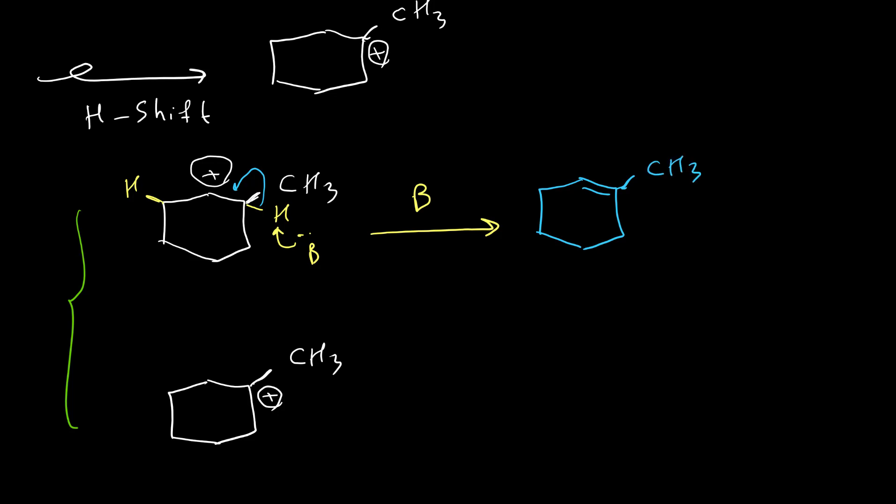We can have this product, which is 1-methylcyclohexene. And then we can have, if we remove this hydrogen, I'm going to change the color to green, then our double bond will be here. And this one is 3-methylcyclohexene. So we have two different products from this carbocation.